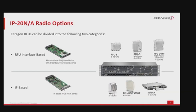IP20N and IP20A offer two different options based on the way they communicate with radio units. For RFU interface-based RFUs, these units are connected to the IDU over optical fiber or electrical CAT5/CAT6 cable using a RIC-D card. RFUD and RFUDHP are multi-core radio units with two radio carriers in a single unit. RFUDHP requires external DC power, while RFUD and RFUS support integrated Power over Ethernet. All mentioned RFUs can operate up to 4096 QAM modulation.